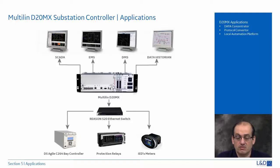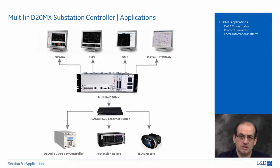As a local automation platform, the D20MX — like the entire D20 family — has strong processing power for calculations required by HMIs to present the right values to engineers and field services. It has the ability to convert data before transferring it to the HMIs, and can take control actions based on schemes calculated locally on the D20MX. There are calculator applications and logic-building applications like Logic Links that facilitate fast, easy calculation and manipulation of data as a local application platform.